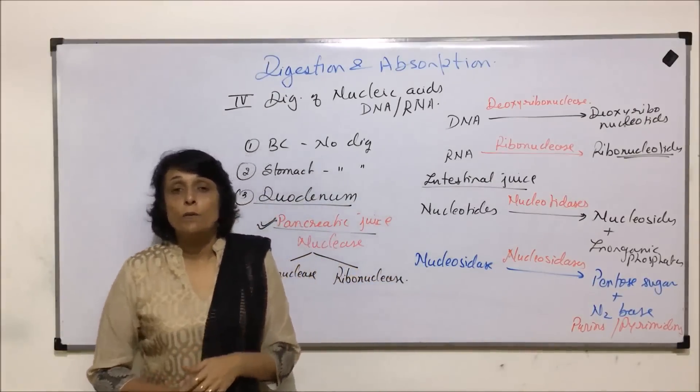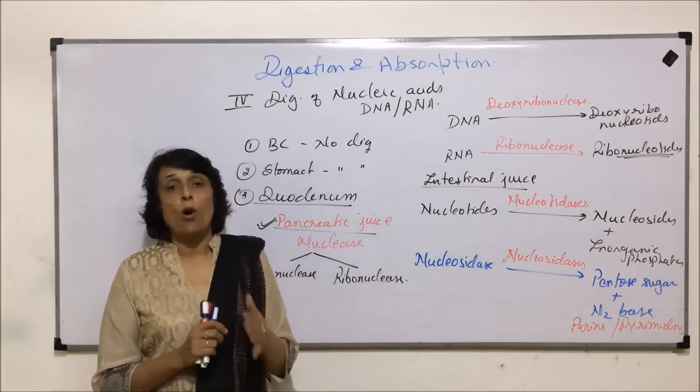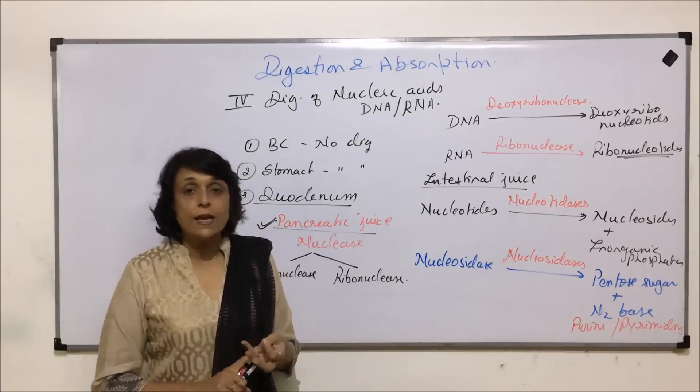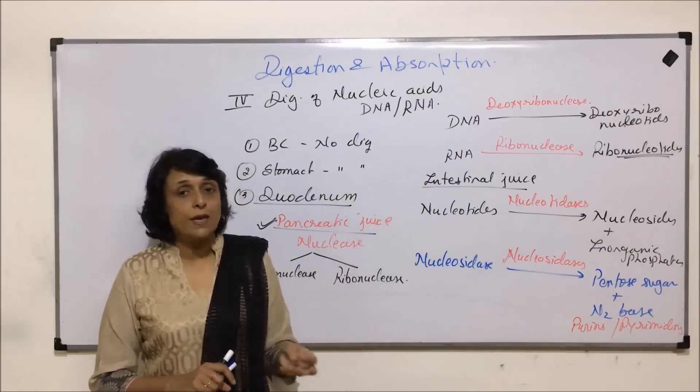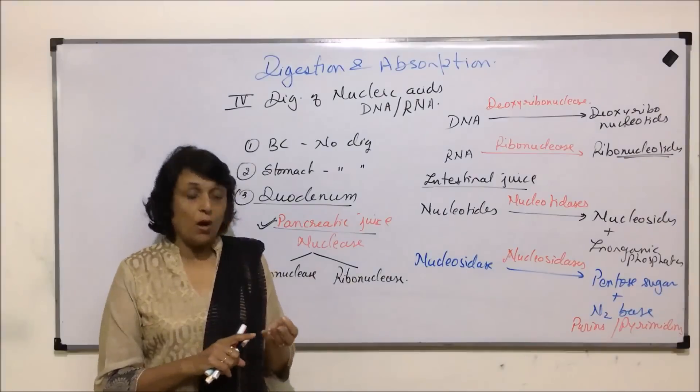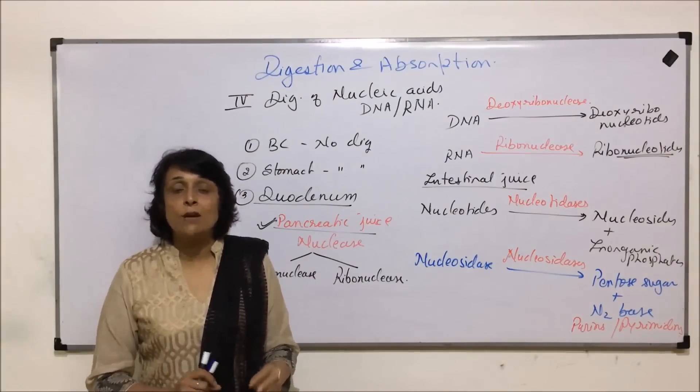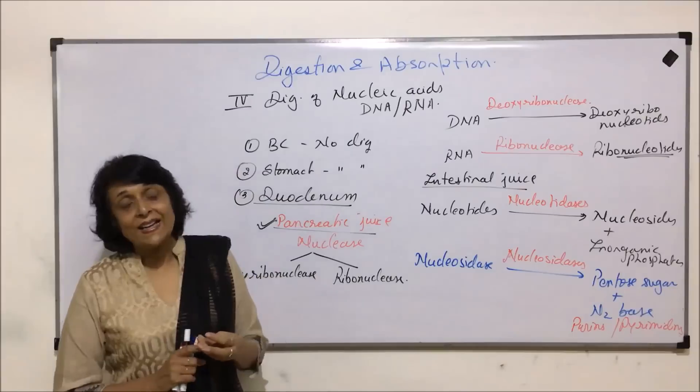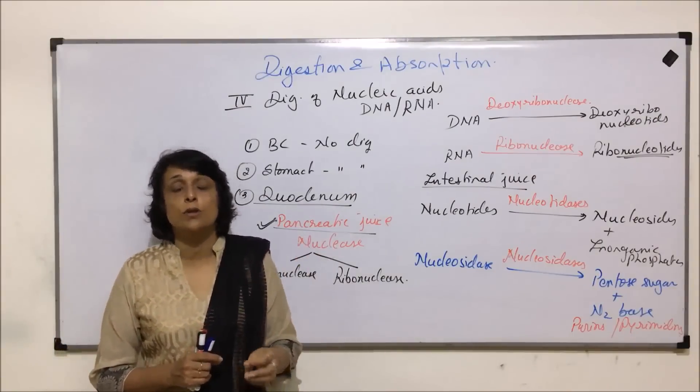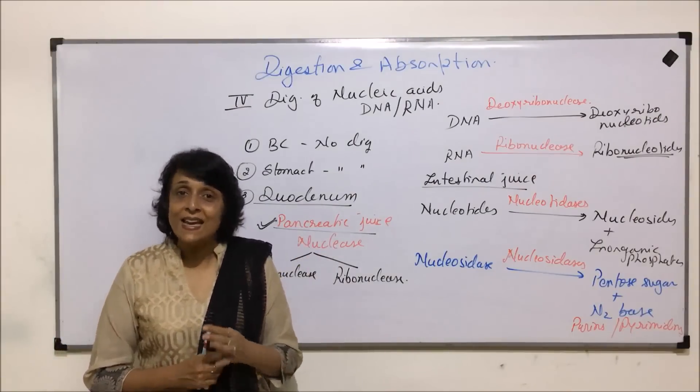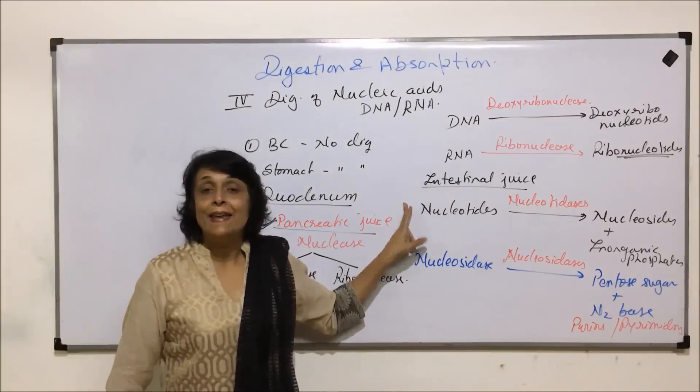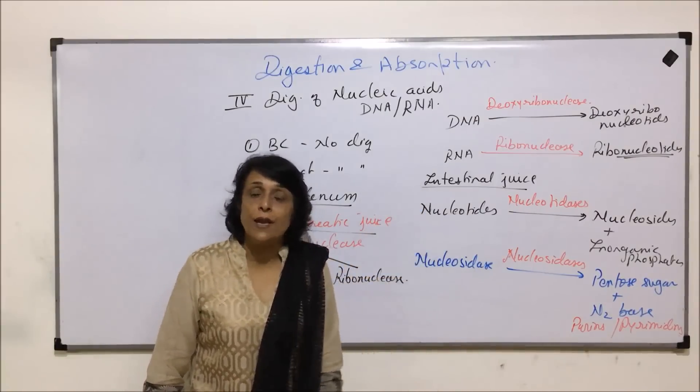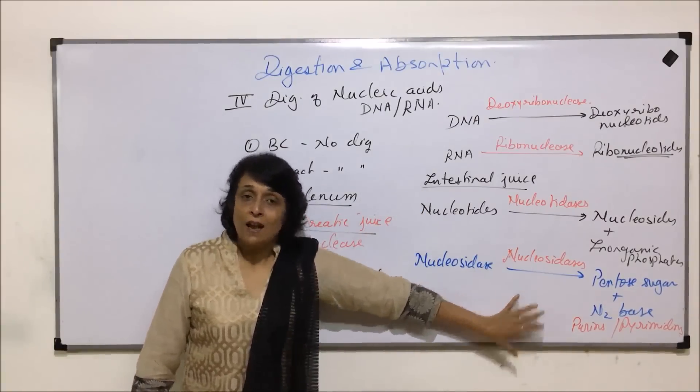So up till now what we have seen is in all the nutrients that we consume: carbohydrates get broken down into monosaccharides like glucose, fructose and all. Proteins are broken down into their monomer units, that is amino acids. Fats are broken down into their constituent units, that is fatty acids and glycerol. And here we saw that nucleic acids are also broken down into their simplest possible units.